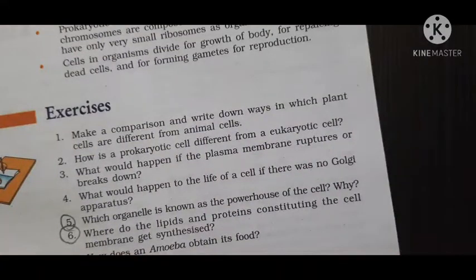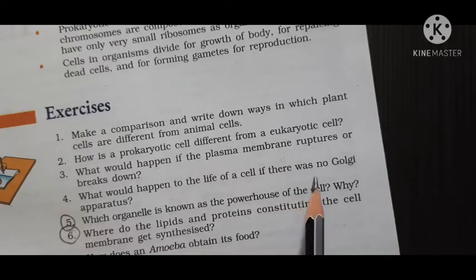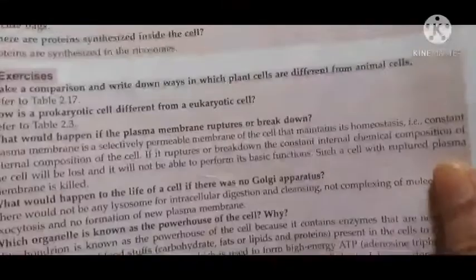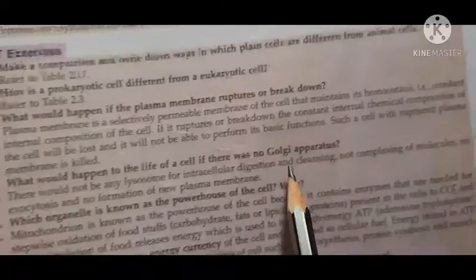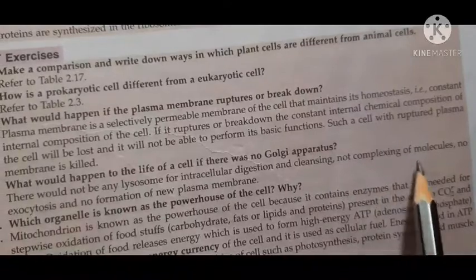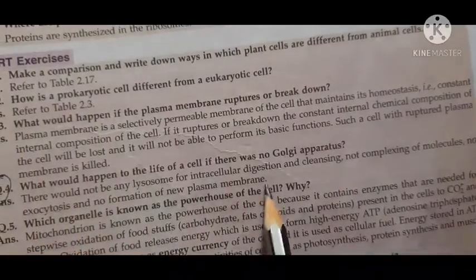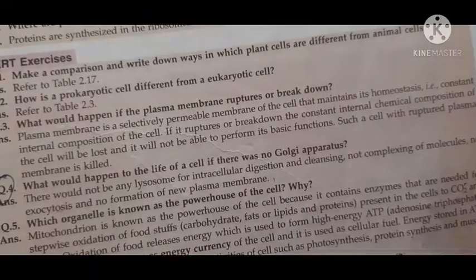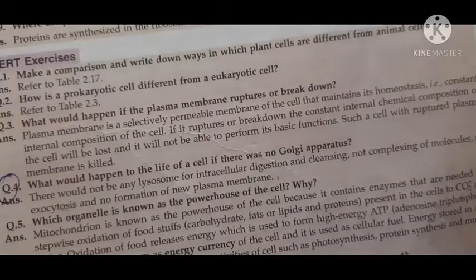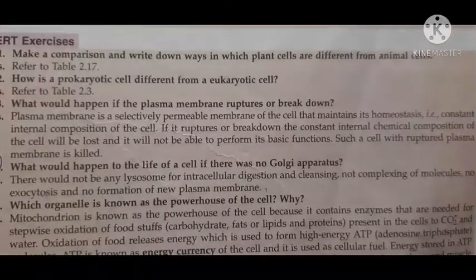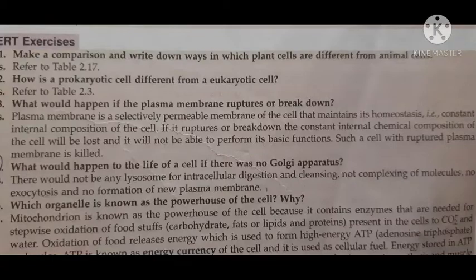Now question number 4: what would happen to the life of a cell if there was no Golgi apparatus? So you can write this answer: there would not be any lysosomes for intracellular digestion and cleansing. No complexing of molecules. No exocytosis and no formation of plasma membrane would have taken place. Because this is the function of Golgi apparatus. What is the function of Golgi apparatus? You should know. And if you know the function of Golgi apparatus, then you can write this answer.